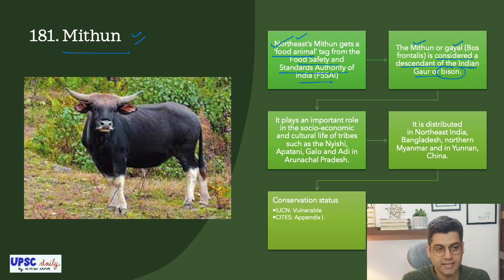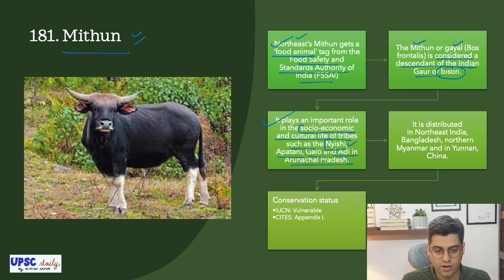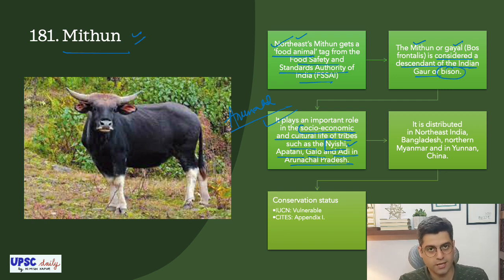It plays an important role in the socio-economic and cultural life of tribes such as Nishi, Apatani, Galo and Adi in Arunachal Pradesh. It is primarily found in Arunachal Pradesh and a lot of areas in northeast India, with specific significance for the tribes of Arunachal Pradesh.